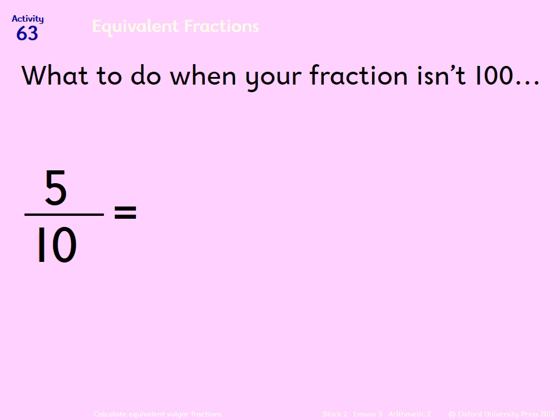We need to change 5 tenths into something over 100. So we need to change that denominator. How do we change a 10 into 100? We times it by 10. Remember, whatever we do at the bottom, we do it at the top.